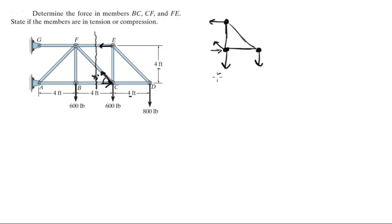So this is 600, this is 800, this is C, this is D, this is E, and this angle right here is 45 degrees. This is EF, this diagonal one is CF, and this horizontal one is BC.